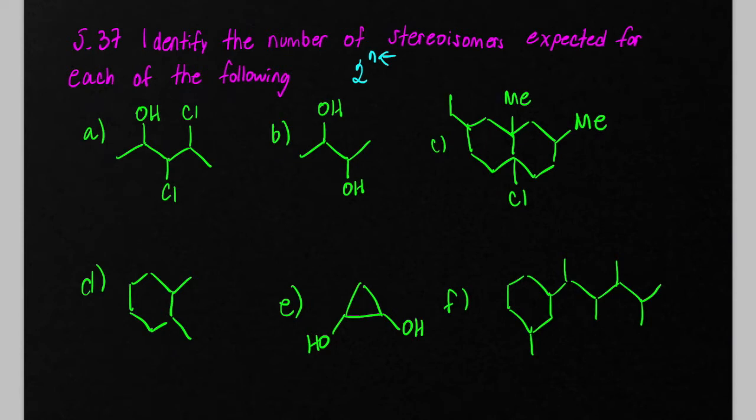So let's take a look at problem A. This carbon here has four groups, this carbon here has four groups, and this carbon here has four groups. Because it has three stereocenters, the maximum number of stereoisomers we would expect is 2 to the third, which is 8.